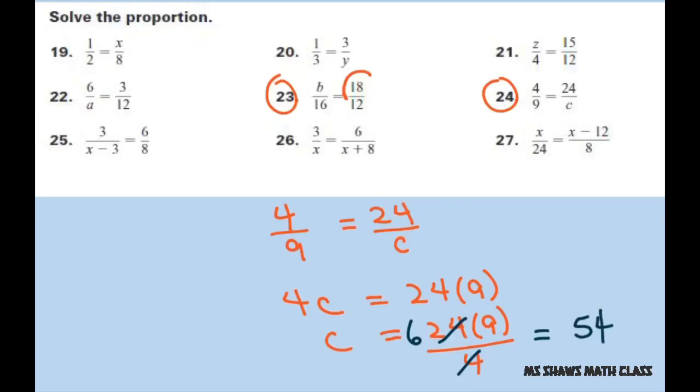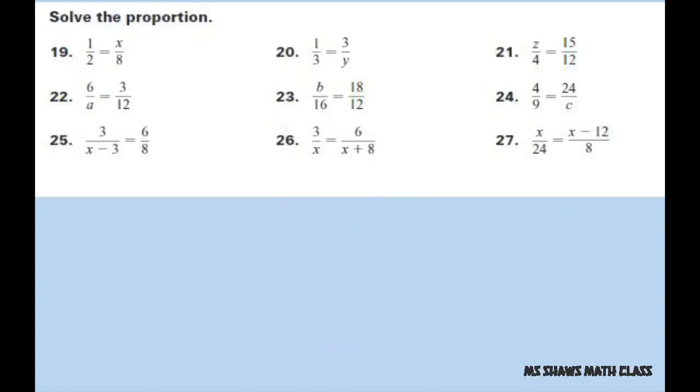Alright, for the next set we can cross multiply, so you get 24 equals 6 times (x minus 3). We're going to take care of the right hand side of the equation by distributing. Add 18 to both sides.